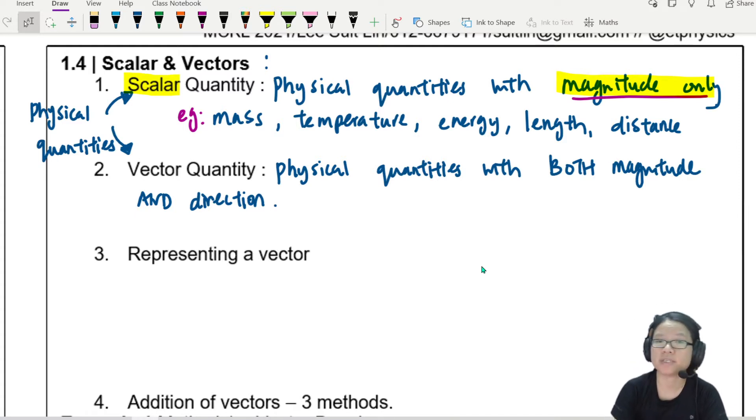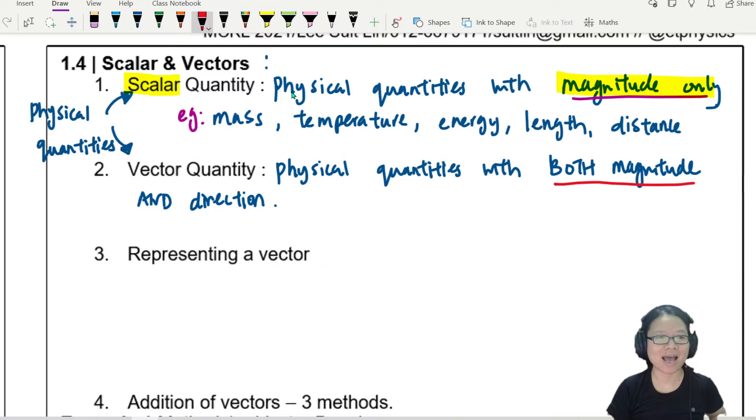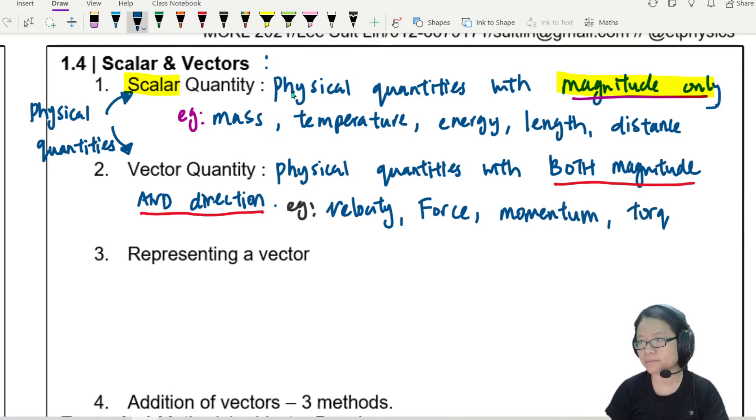A vector quantity is like the velocity of this chicken in the mine cart. It has both magnitude, how fast it's moving, and direction, whether it's moving to the left or to the right, from my perspective using this golden block as a reference point. So vector quantity is physical quantities with both magnitude and direction. We need both.